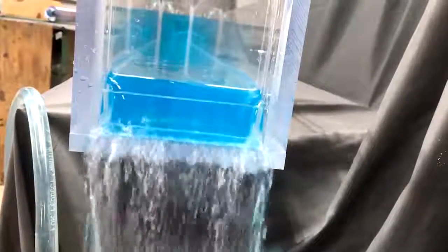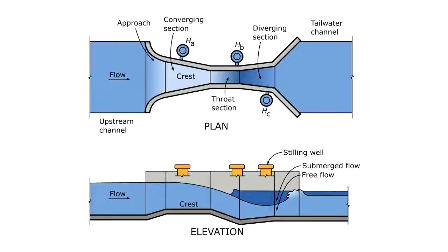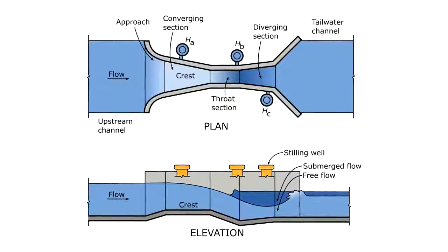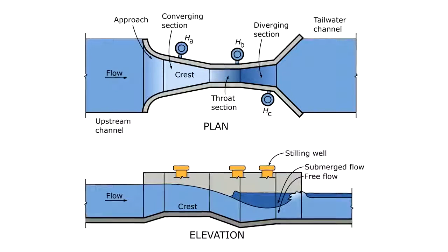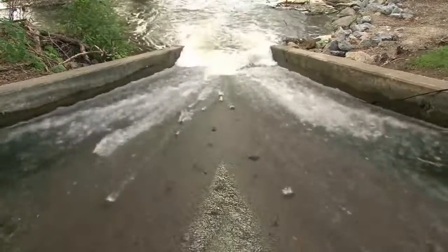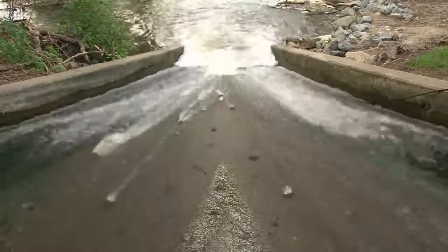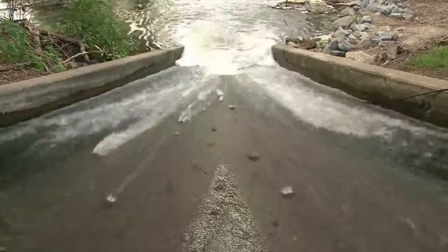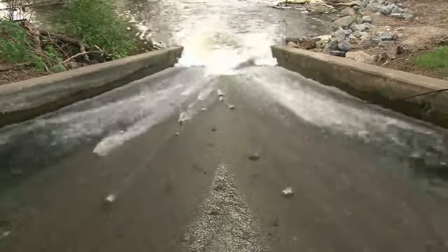A flow profile can naturally transition from subcritical to supercritical — that is, from slow to fast. For example, if a channel changes to a steeper slope or a cliff. Many types of flow measurement devices rely on forcing a flow to transition from sub to supercritical because there will be a unique relationship between the flow rate and the depth for a given geometry. But when flow transitions the other direction — when a fast moving supercritical flow transitions to a more tranquil, subcritical condition — something much more interesting happens: a hydraulic jump.